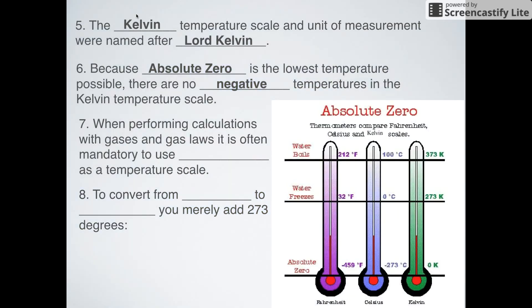Just take a look at this visual. We've got at the very bottom Fahrenheit and Celsius. You can see that zero K is equal to negative 273 degrees Celsius or negative 459 degrees Fahrenheit. Keep in mind that whenever we do gas law calculations, it is often mandatory that we use this Kelvin unit of measurement. If we use Celsius, it won't work.